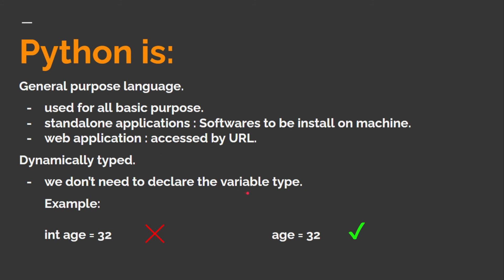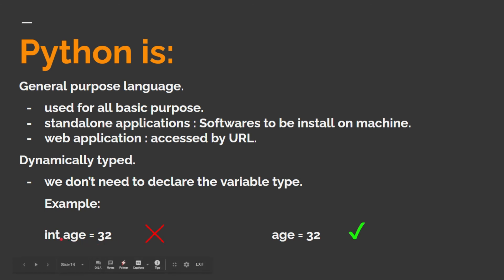Python is also dynamically typed, which means we do not need to declare the type of a variable — we only need to initialize its value. For example, writing int equal to 32 would be wrong in Python; we simply write the variable name equal to 32.